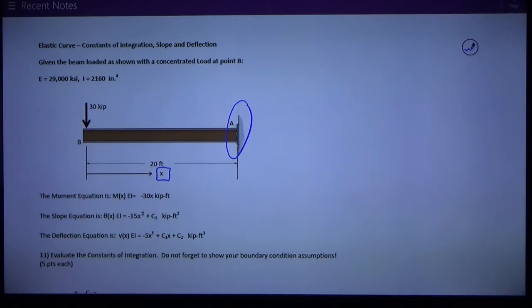We're given that E is 29,000 KSI, it must be made out of steel, I is 2160 inches to the fourth power, and the first thing to do on these problems is always to draw what you think the beam is going to look like when it's deflected. It's not going to slope at point A, but then it's going to start sloping more and more. So I think it's going to look something like that blue line I've drawn, the center line of that beam.